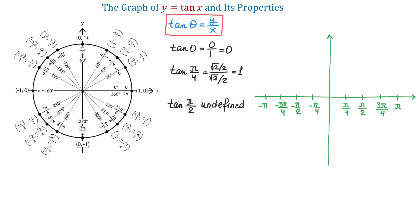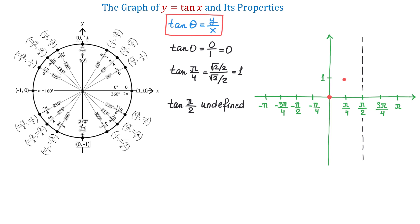Now, let's see the behavior of the tangent function from 0 to pi over 2. We know that at 0, the value of the tangent is 0, and this means that the tangent function crosses the origin. At pi over 4, the value of the tangent is 1, and we will plot this point as well. Then, at pi over 2, the tangent is undefined, and this means that at this value we will have a vertical asymptote. So, as x approaches pi over 2, the function will approach infinity. From 0 to pi over 2, this is how the graph will look.